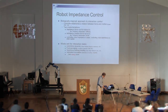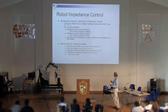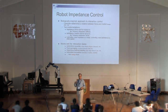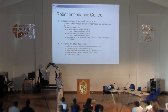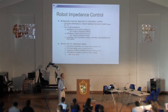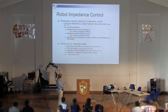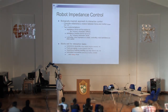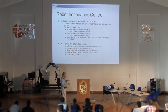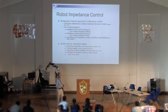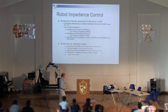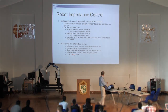Impedance control is biologically inspired — my earliest work was on prosthetic devices. The main point is that we're not controlling force, and not controlling motion: we're controlling a relation between them. The ideal is to specify an impedance. There are two dominant implementations: controlling the system as an impedance — force out for motion in, like a frequency-dependent stiffness — or as an admittance — motion out for force in. Controlling impedance is ideal, but controlling admittance is often easier because robots are more naturally described that way.